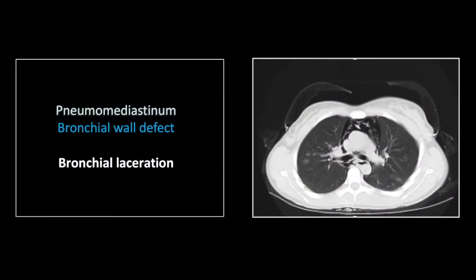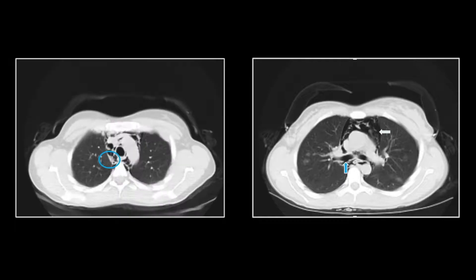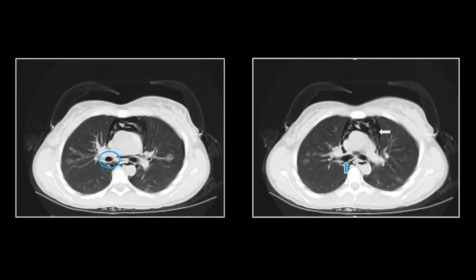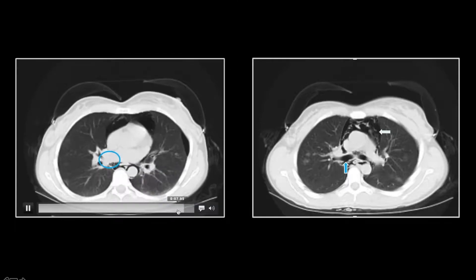A fairly similar case is this bronchial laceration. You can see again extensive pneumomediastinum. On the posterior aspect of the bronchus intermedius there is a focal defect. This was traumatic, and you can see small foci of ground glass density in the pulmonary parenchyma as well. The movie allows you to track the bronchial wall and see that defect very nicely.